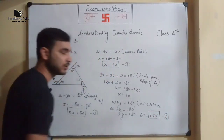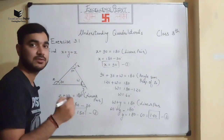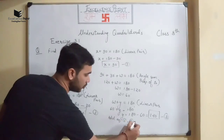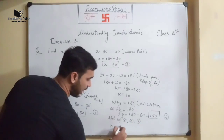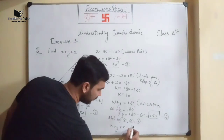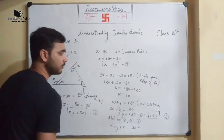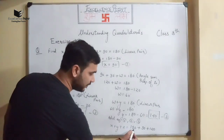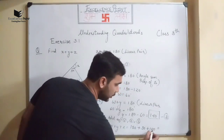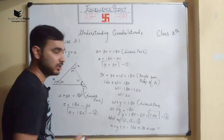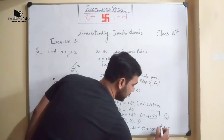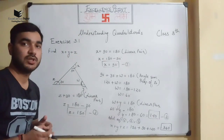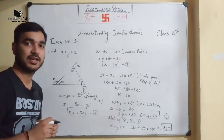Now adding equations 1, 2, and 3: x + y + z = 150 + 90 + 120 = 360°. The final answer is always equal to 360°, which equals the sum of exterior angles.